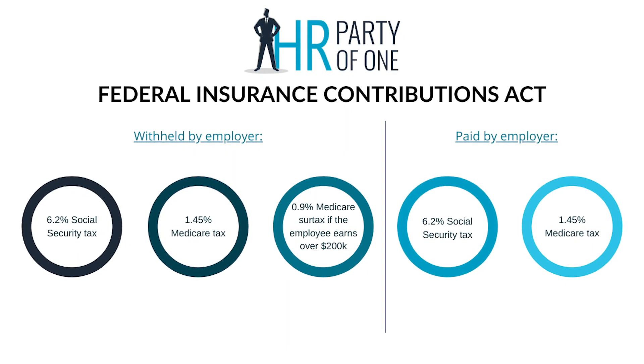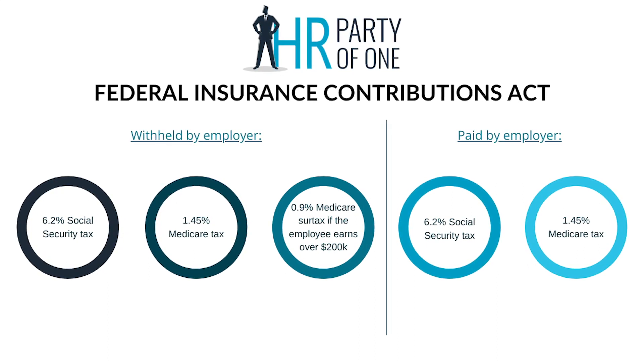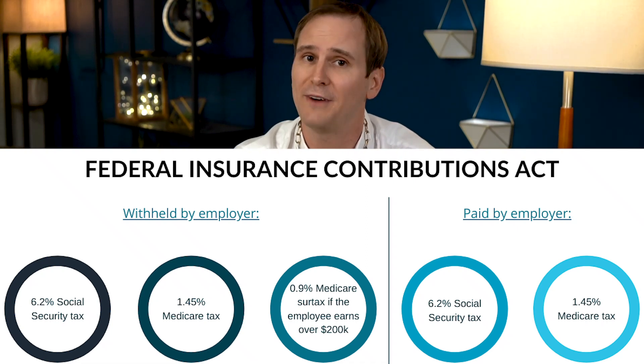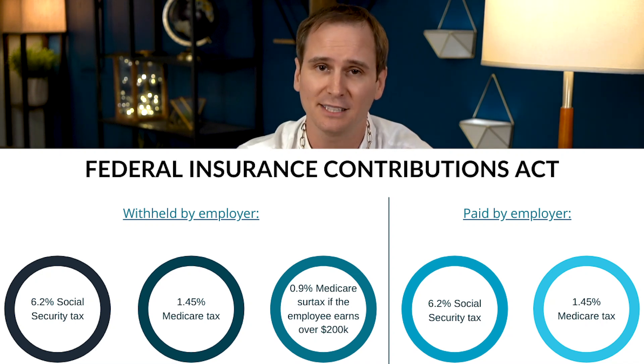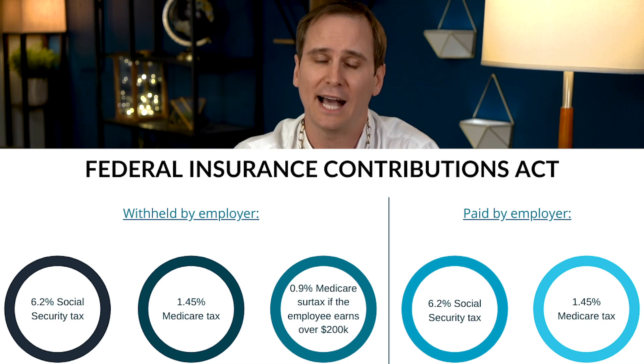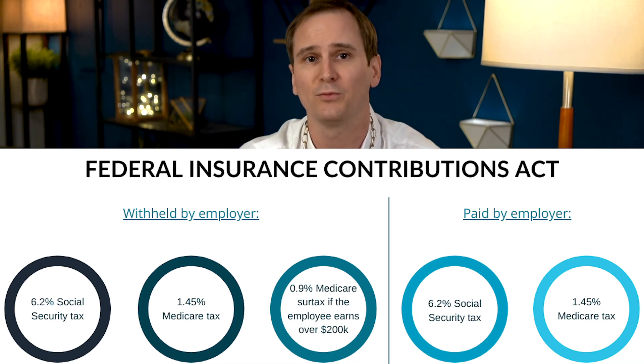What are the FICA requirements? FICA requires employers to withhold three separate taxes from the wages you pay your employees. FICA is comprised of a 6.2% Social Security tax, a 1.45% regular Medicare tax, and since 2013, a 0.9% Medicare surtax when the employee earns over $200,000. The law also requires you to pay the employer's portion of two of these taxes: the 6.2% Social Security tax and the 1.45% Medicare tax. Starting in 2020, the maximum earnings subject to Social Security payroll tax increased by $4,800 to a cap of $137,000.